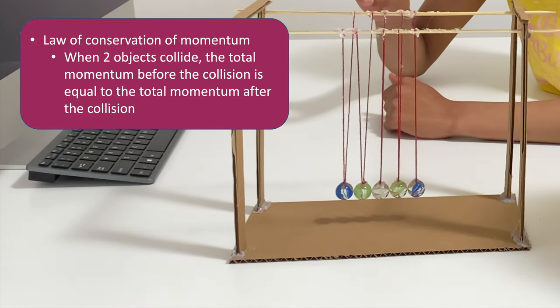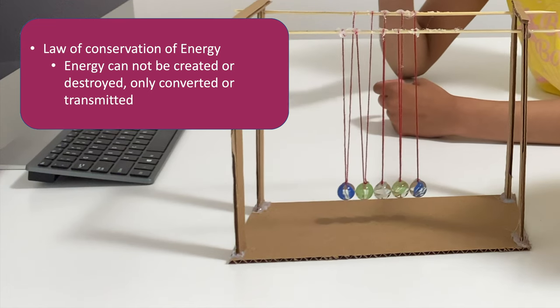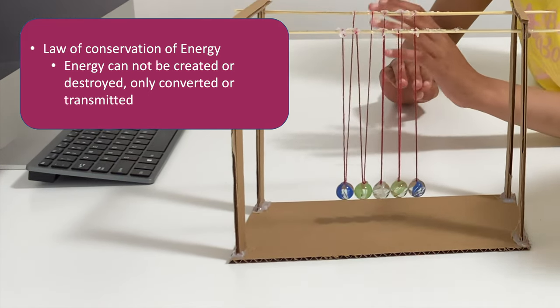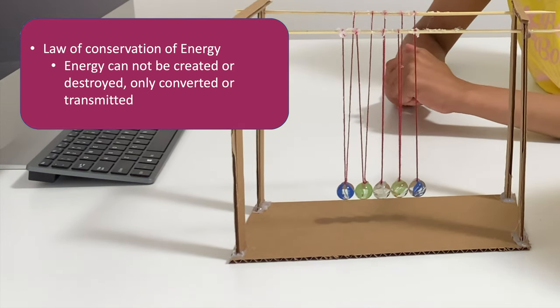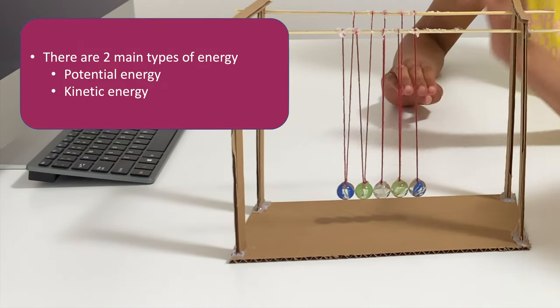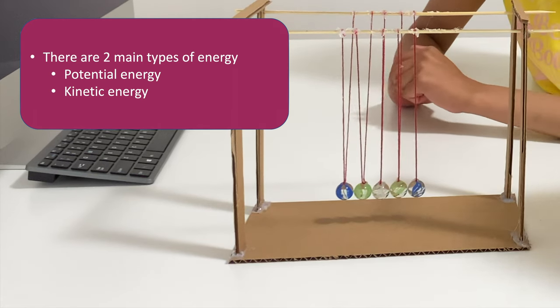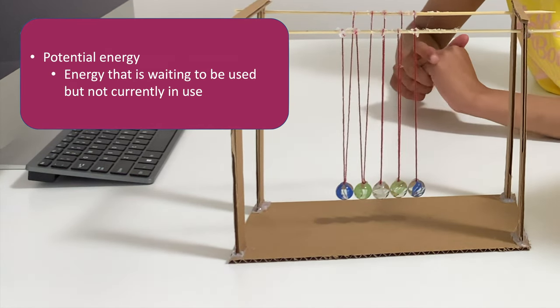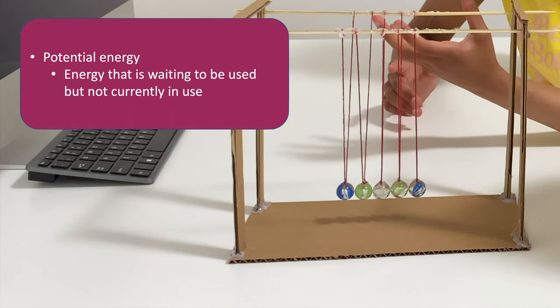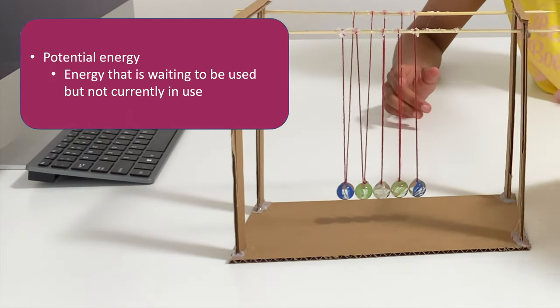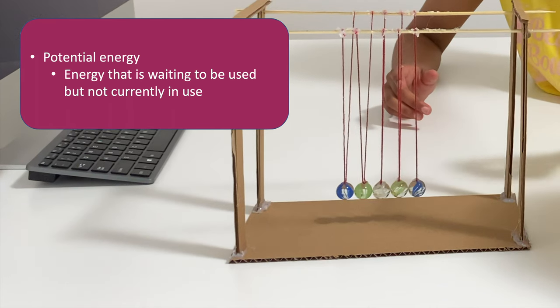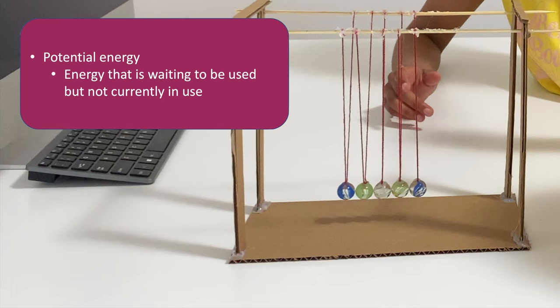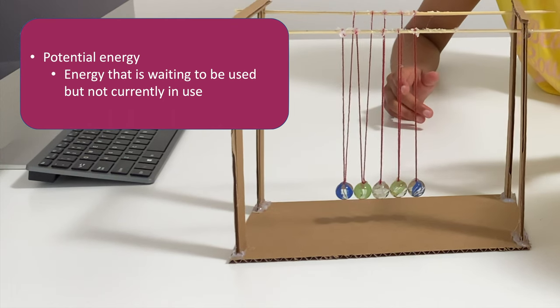In the second law, the law of conservation of energy, it states that energy cannot be created or destroyed, only transmitted and converted. So what happens is there are two main types of energy, potential energy and kinetic energy. Potential energy is stored energy waiting to be used. So when we lift the ball up, that ball has gravitational energy stored waiting to be used. And now that potential energy, when we let that ball go, turns into kinetic energy.